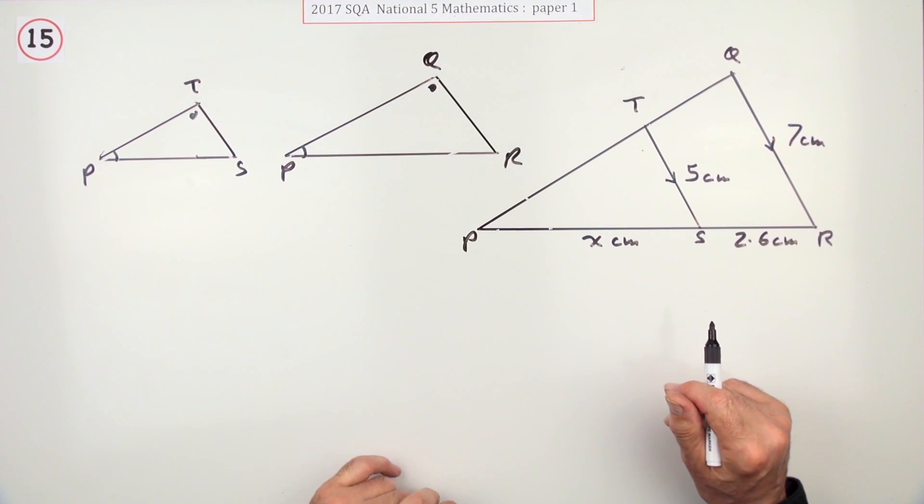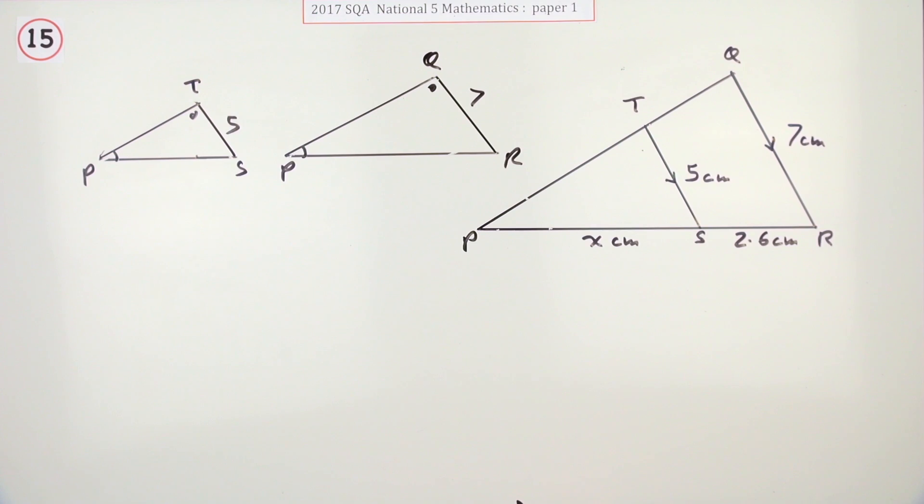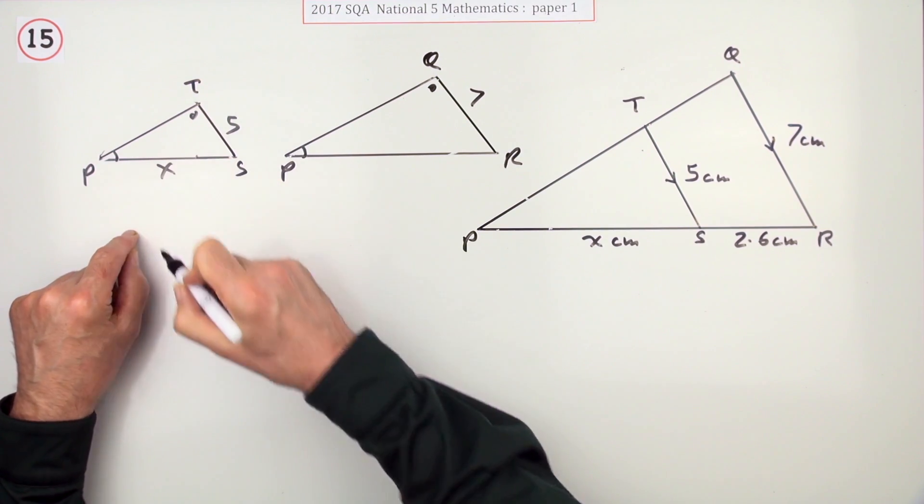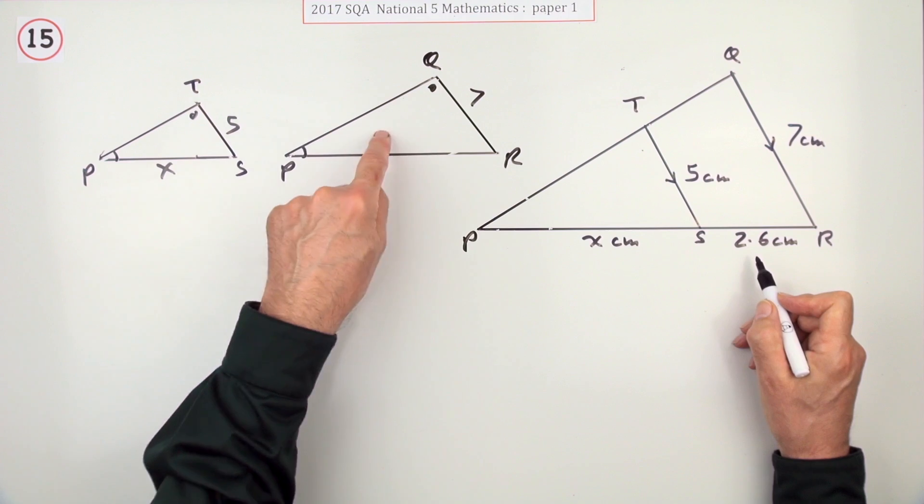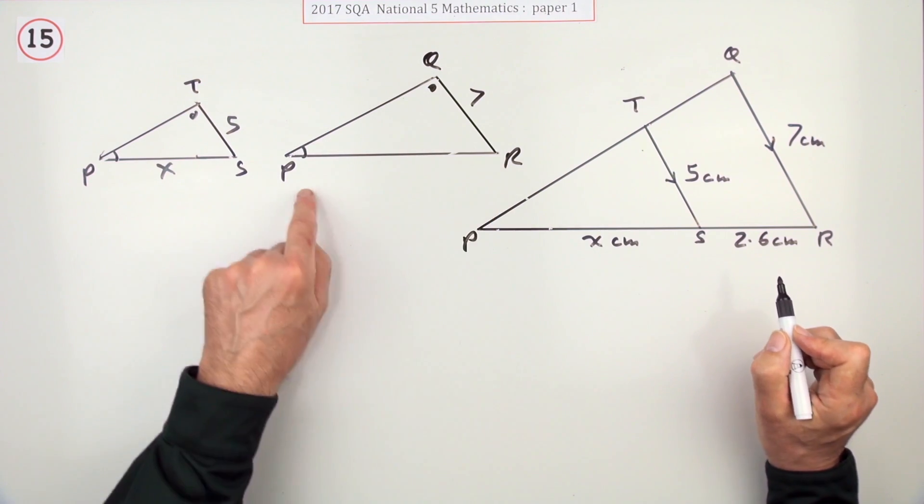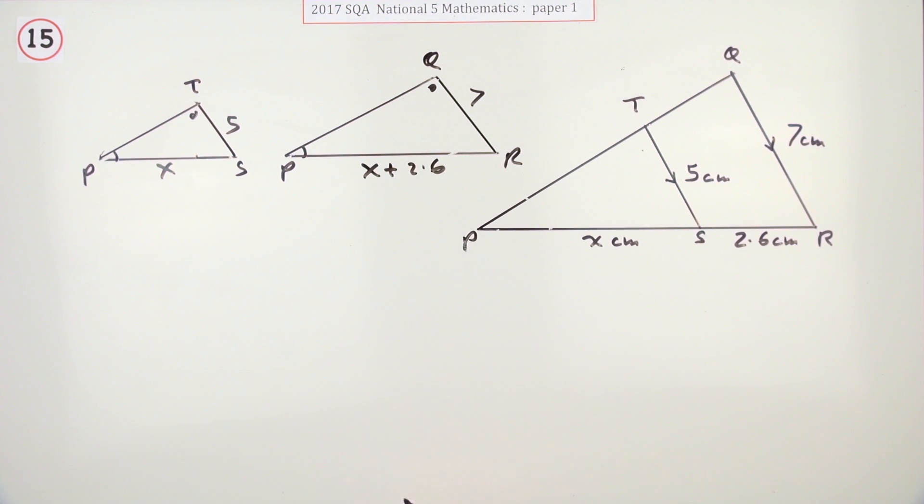The ratio of corresponding sides will be the same. So let's put those sides in. Well, that's 5 and that's 7. So that gives you the ratio of corresponding sides. That side is x, but that side's not 2.6. You only deal with whole sides in this, complete sides. So this side is actually x plus 2.6.